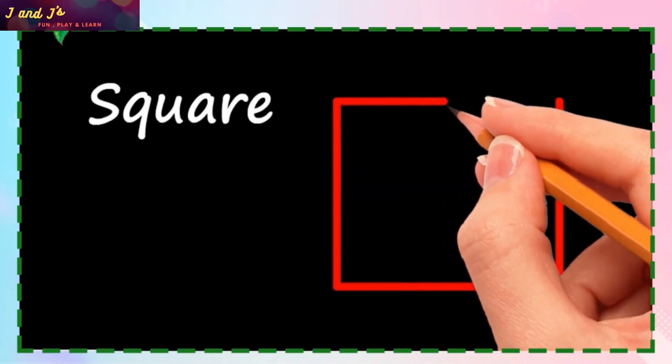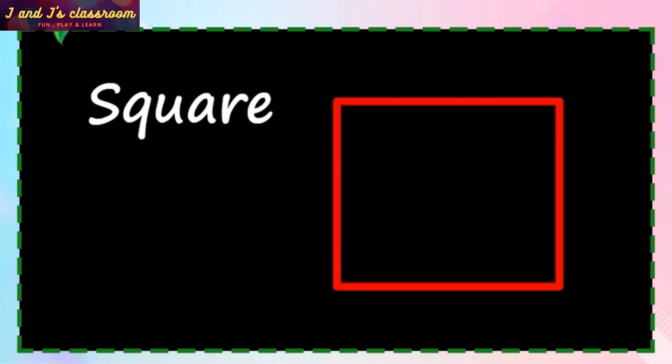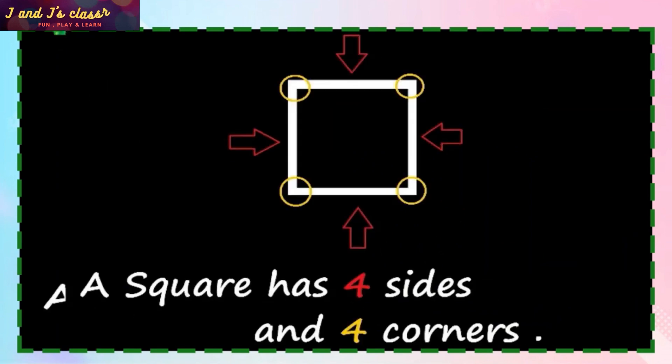Square. 1, 2, 3, 4. Draw 4 straight lines. A square has 4 sides and 4 corners.